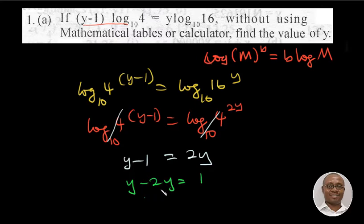So if we now have y minus 2y, we get minus y equals 1. Dividing both sides by the negative, we have y equals minus 1.